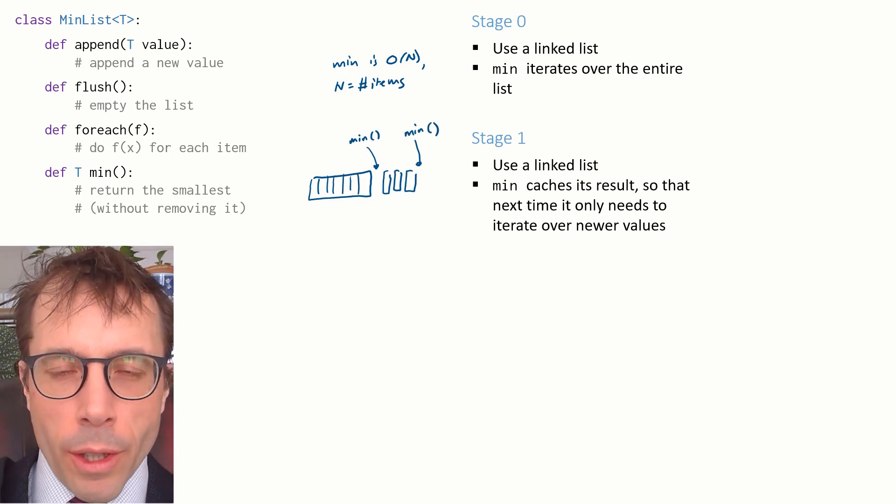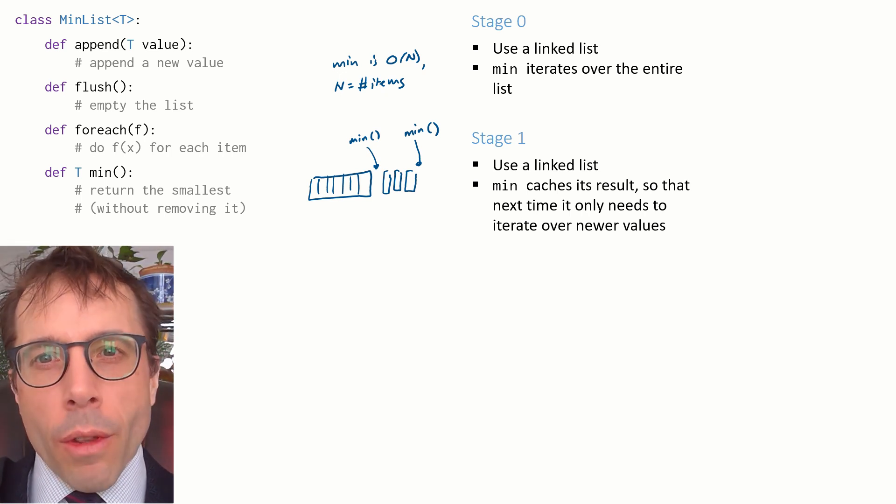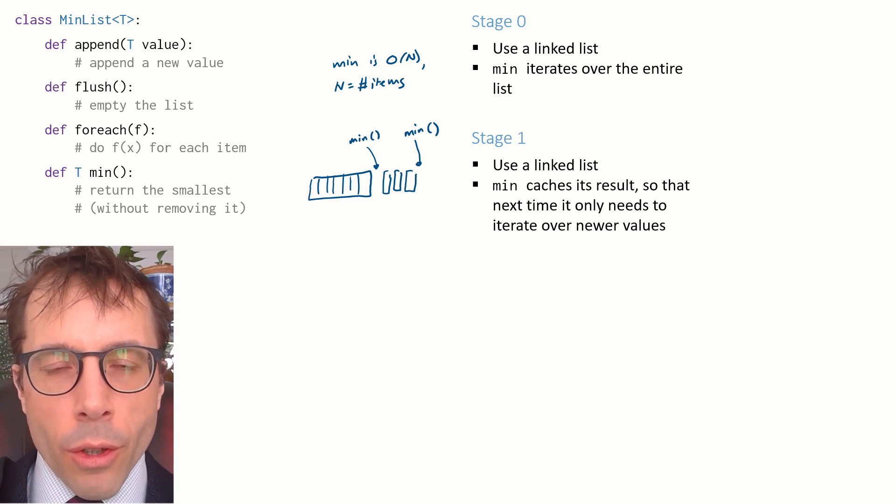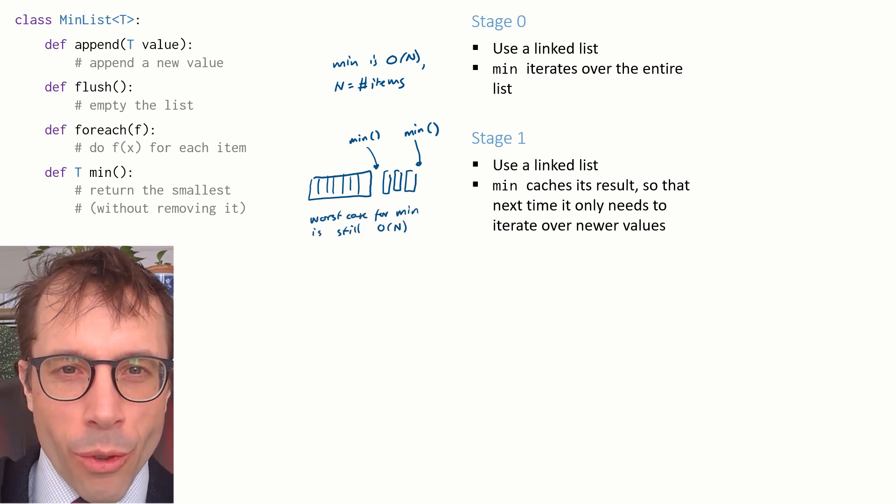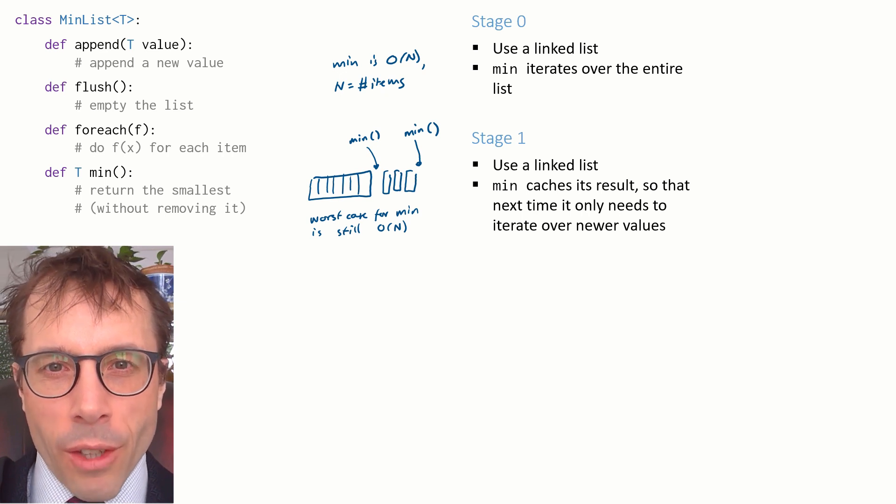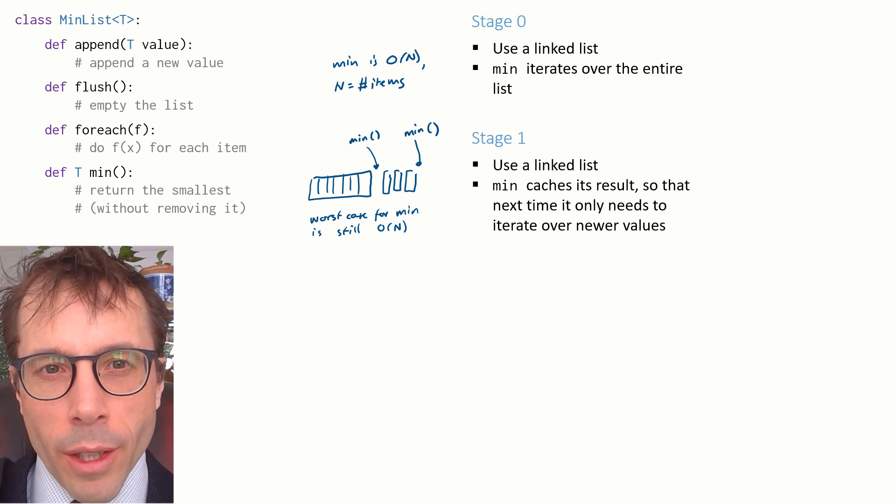We'll implement min differently this time. We'll keep a pointer to what was the tail of the queue last time that min got called and we'll remember the minimum item that we found up to that point, so that the next time someone calls min all we need to look at is the newly added items. But does this actually help? Well, what's the worst case? The worst case is still big O of n because in the worst case there was no earlier call to min and we have to trawl through the entire list.